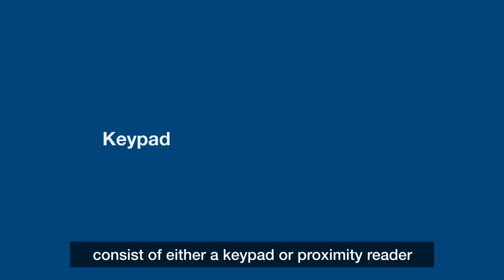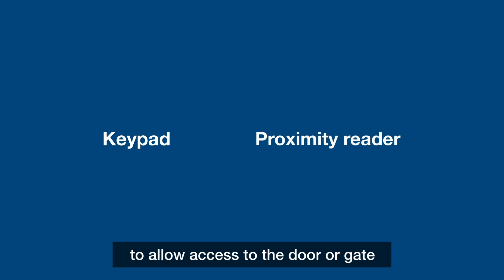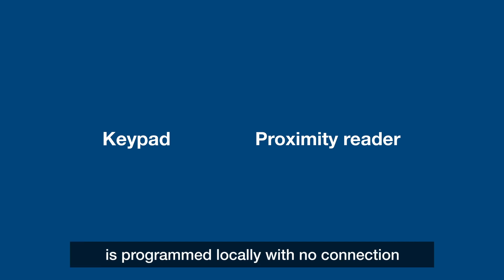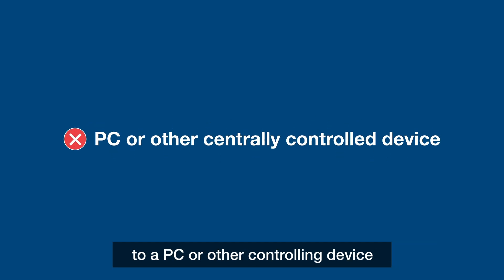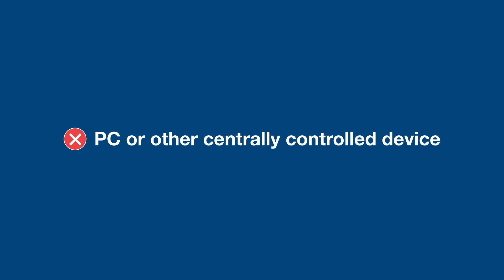Standalone access control systems consist of either a keypad or proximity reader to allow access to the door or gate. The keypad or proximity reader is programmed locally with no connection to a PC or other controlling device.